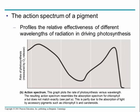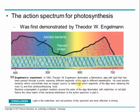Here you can see the action spectrum. This is the rate of photosynthesis measured by oxygen release — higher for the lower wavelengths and the higher wavelengths, and very little occurring for the middle wavelengths where green is.